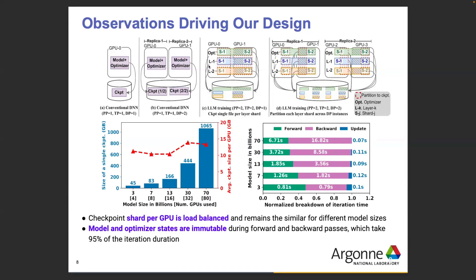We ran initial experiments to understand the opportunities in this space. One key opportunity is that training is iterative — it consists of a forward pass, a backward pass, and an update phase where you update the model parameters. During the forward and backward passes you only compute gradients, and only during the update phase do you mutate the data structures. So for a large fraction of the iteration the data remains stable, which creates a great opportunity to do asynchronous copies to storage in the background.